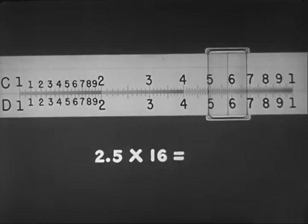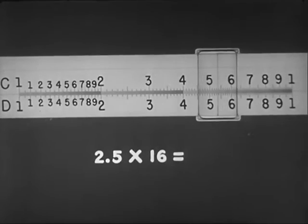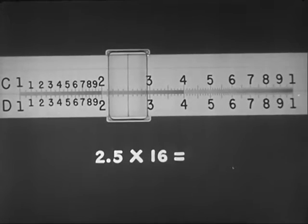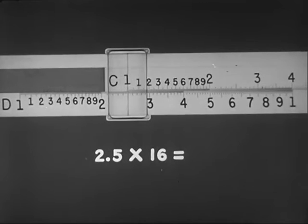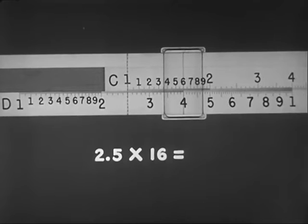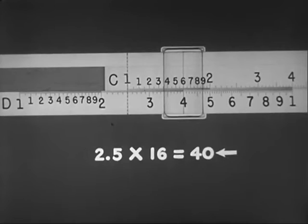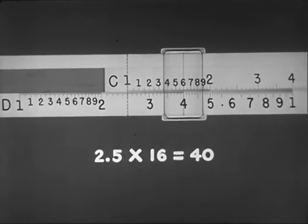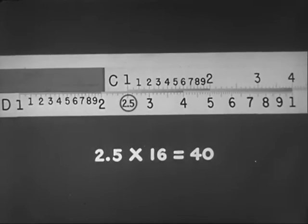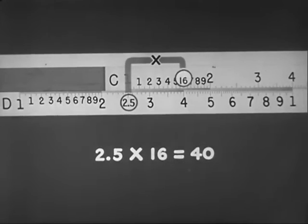To multiply 2.5 by 16, for example, first find 2.5 on D, and to it slide the index of C. Move the hairline to 16 on C, and read the answer 40 under the hairline on D. The ciphers and decimals required by the problem are placed mentally. The procedure may be diagrammed like this: 2.5 times 16 equals 40.